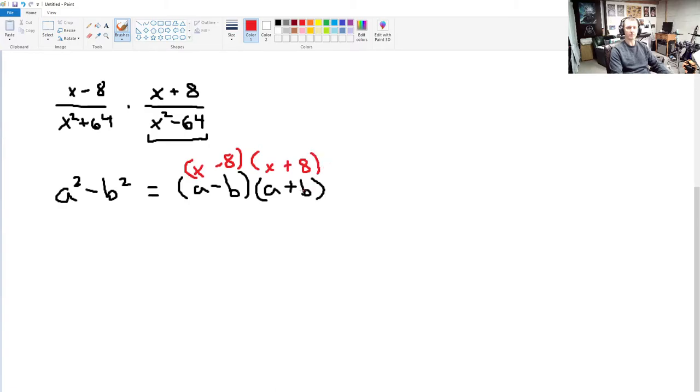Okay? So, that follows exactly the pattern that we see here. And it actually makes this problem quite simple, right? Because now, this x squared minus 64, we're just going to replace that with what we've factored it into. x minus 8 times x plus 8.